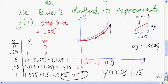We know the actual value is y equals 2, so we're 0.25 units off.